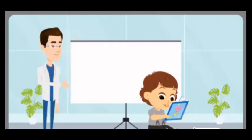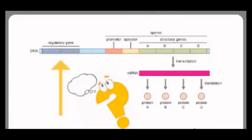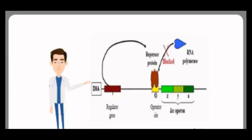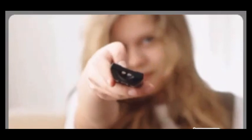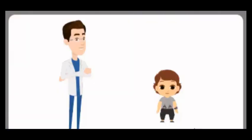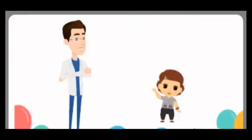Do you know why regulatory sequences are so far from the transcription start site? That's a great question. The distance allows for intricate control over gene expression, making sure it happens at the right time and in the right amounts. It's like having a remote control for gene activity. That makes sense.